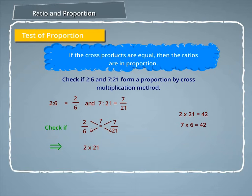As we can see, 2 into 21 is equal to 7 into 6. Since the cross products are equal, 2 is to 6 and 7 is to 21 form a proportion.